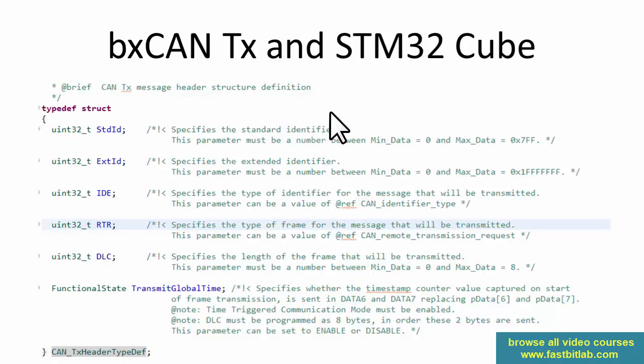How to do BXCAN TX using the STM32Cube API. First of all, you have to know what exactly is the data structure available for you in order to work with the TX path. There is a data structure called CAN_TxHeaderTypeDef in the STM32Cube where you encode all the header details of the frame.